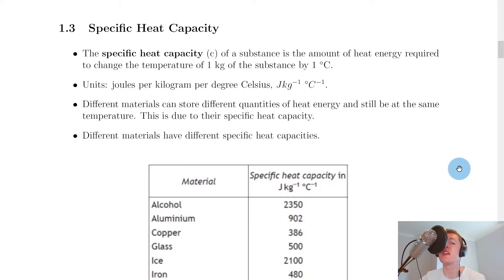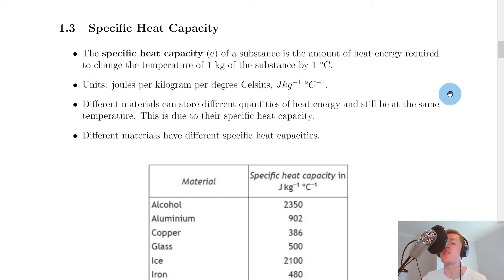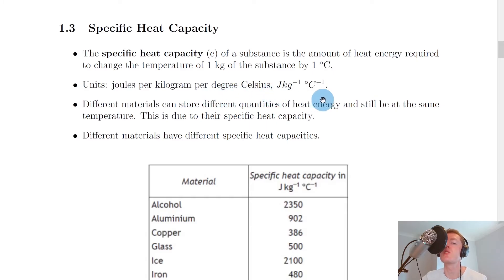The specific heat capacity, given the symbol lowercase c, of a substance is the amount of heat energy required to change the temperature of one kilogram of the substance by one degree Celsius — another way of saying this is per unit mass. The units of specific heat capacity are joules per kilogram per degree Celsius.